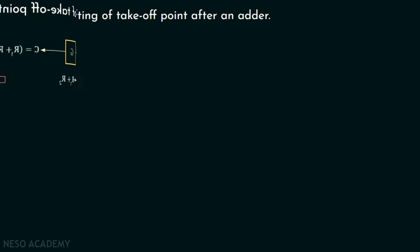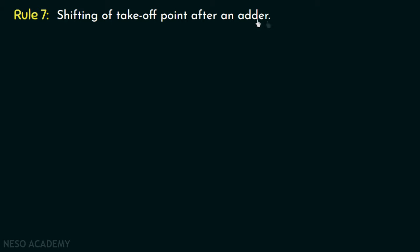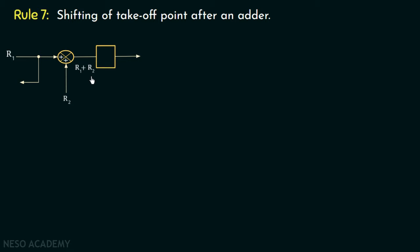Rule number 7 of block diagram reduction is regarding the shifting of a takeoff point after an adder. Consider this block diagram representation in which the adder has two inputs r1 and r2, and hence the output of this adder will be r1 plus r2. The block has gain g, so the final output will be c equal to r1 plus r2 multiplied with g. In this case we have a takeoff point present before the adder. The output of this takeoff point is r1.